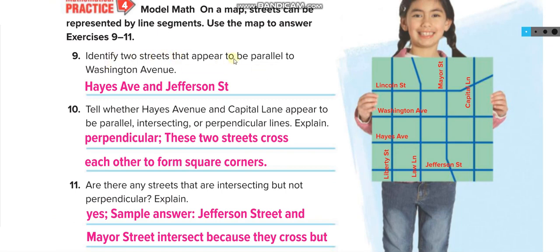Now a real-world application using a street map. Identify two streets that appear to be parallel to Washington Avenue. We can see that Hayes Avenue and Jefferson Street are both parallel to Washington Avenue. Next, tell whether Hayes Avenue and Capitol Lane appear to be parallel or intersecting.